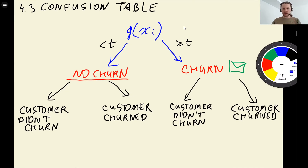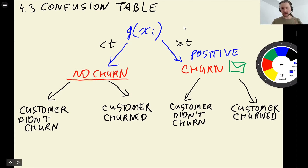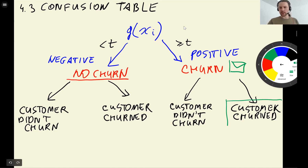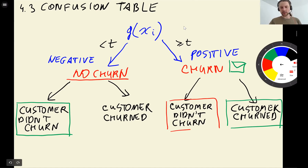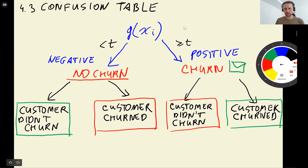When we predict that a customer is churning, we think this instance is a positive class. When we predict no churn, we consider it an instance of the negative class. The two cases where the customer churns and we predicted churn, or the customer didn't churn and we predicted not churn, are correct decisions. The other two — predicting churn when they don't, or predicting not churn when they do — are incorrect.